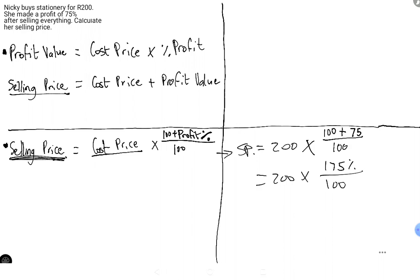It's over 100 because anything that is a percentage is over a hundred. So: 200 times 175 over 100. The selling price is 350 rands. Nikki goes into a store, spends 200 rands, then doesn't sell the stationery at 200 rands — she adds a 75 percent on top of what she spent because she wants to get more money out of it. She wants 75 percent more.